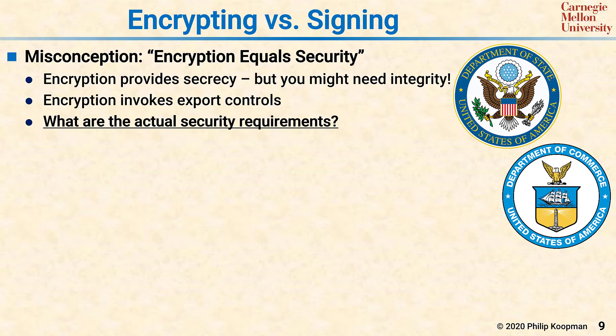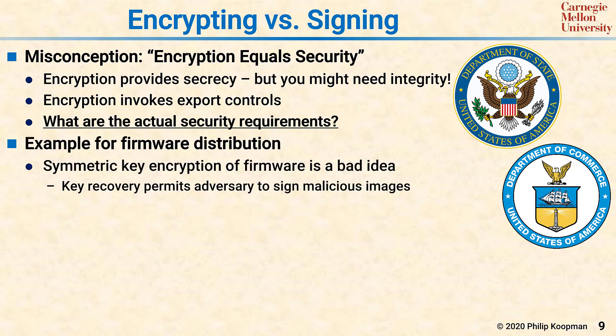Let's use firmware distribution as an example. Let's say you want to send a firmware update and you want security on that firmware update. We already know that using a symmetric key encryption for the firmware is a bad idea, because if someone captures one of your systems and they extract the symmetric key, now they can not only decrypt your firmware update, but they can forge fake versions that are malicious. So you'd never want to use a symmetric key, because it leaves you exposed to malicious copies circulating.